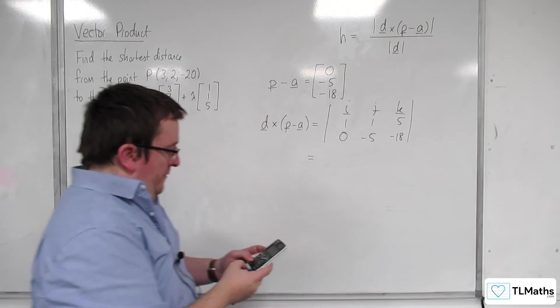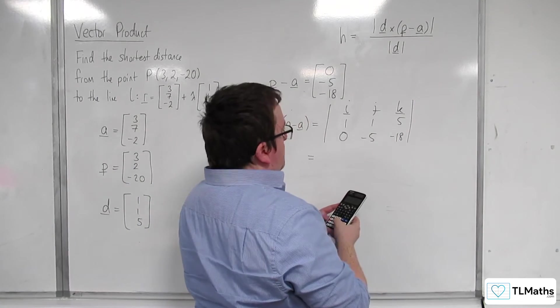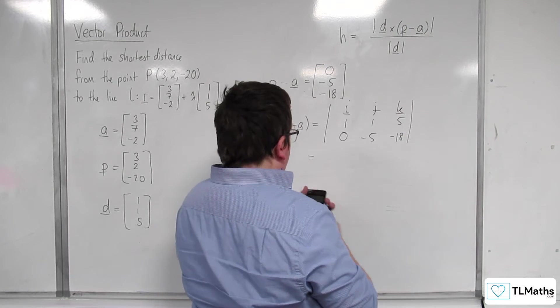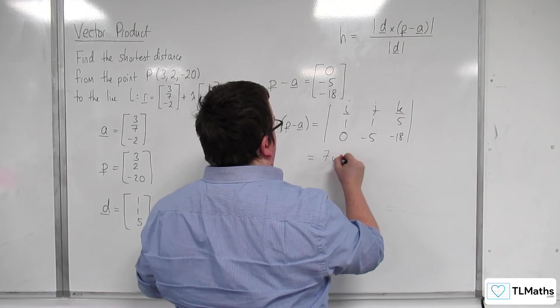We're going to have minus 18 take away minus 5 times 5, so that's 7. We get 7I.